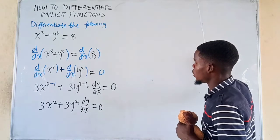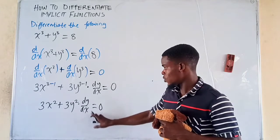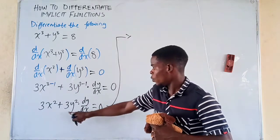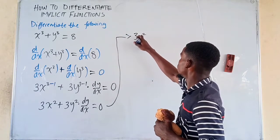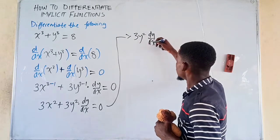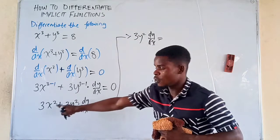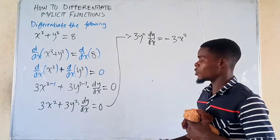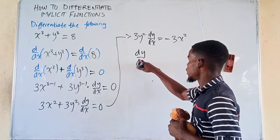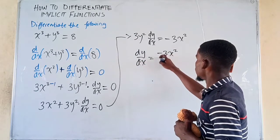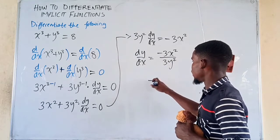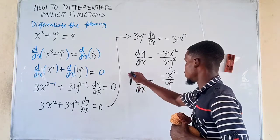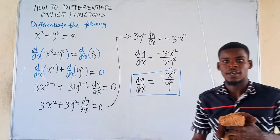Our interest is to find the derivative of y with respect to x. That means we want to make dy/dx stand alone on one side, so we move every other thing to the right-hand side. We will have 3y squared times dy/dx equals negative 3x squared. Then we divide both sides by 3y squared, so dy/dx becomes negative 3x squared divided by 3y squared, which gives us negative x squared divided by y squared. And that is the derivative of y with respect to x.